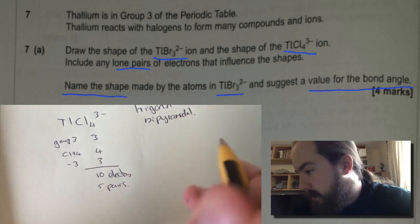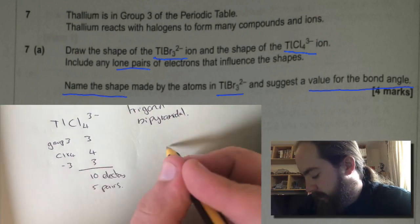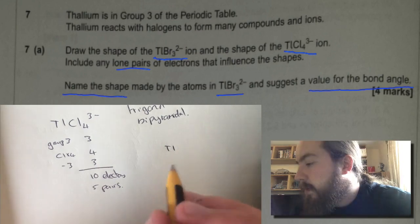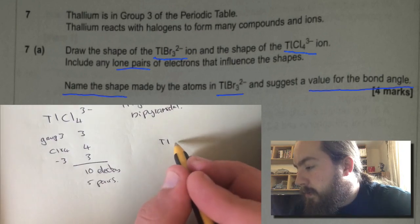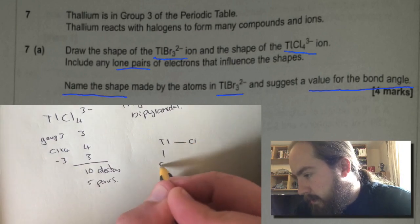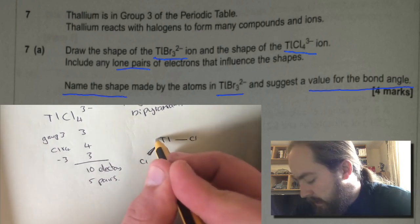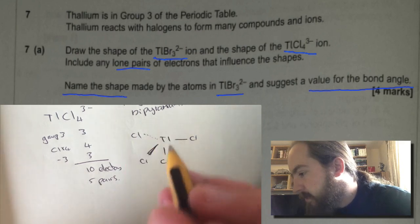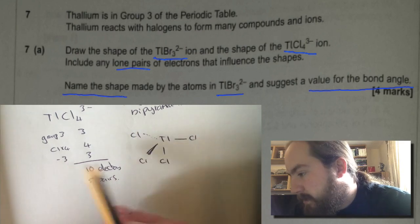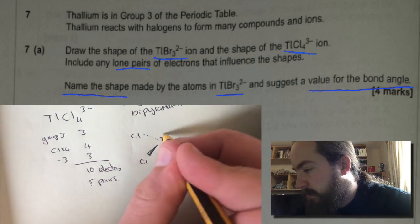So our shape will be trigonal bipyramidal. And we'll draw that with a Tl in the middle. Two chlorines in the same plane. One coming off into the foreground and one going off into the distance. And then at the top because we've got 4 chlorines and 5 pairs that means you must have a lone pair of electrons at the top.